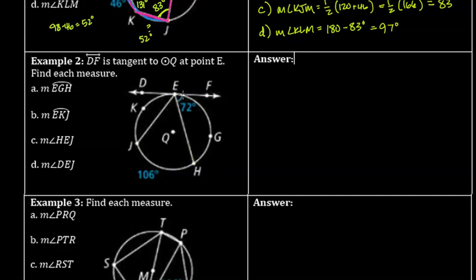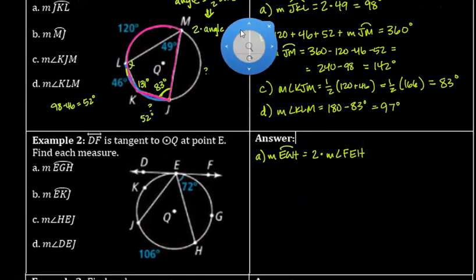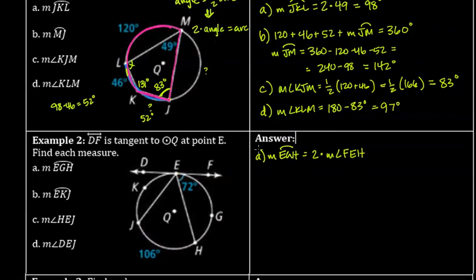The first question asks for arc EGH. That arc is intercepted by angle FEH. Using the same idea that arc measure = 2 times the angle's measure when the vertex is on the circle, the measure of arc EGH = 2 × 72 = 144 degrees. I'll write that on the picture so I know that arc is 144 degrees.